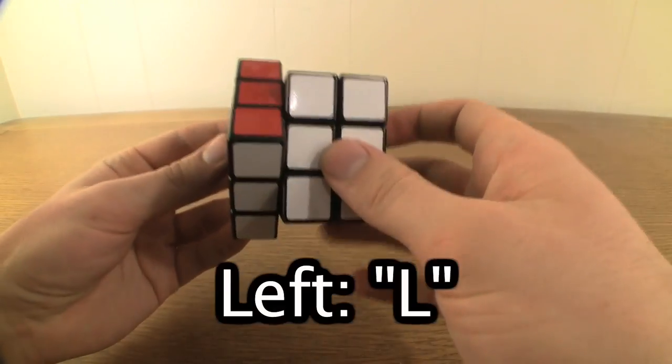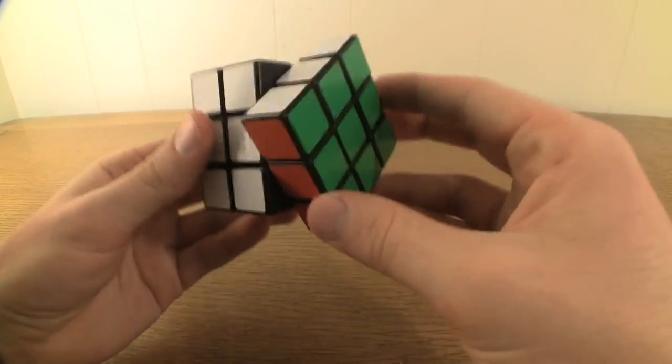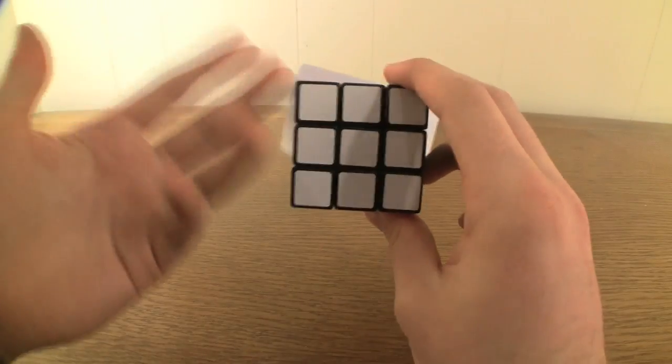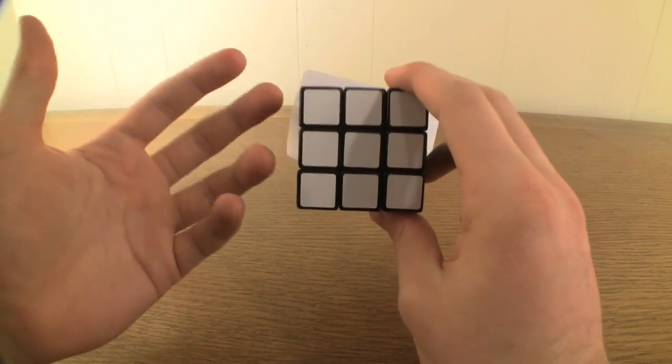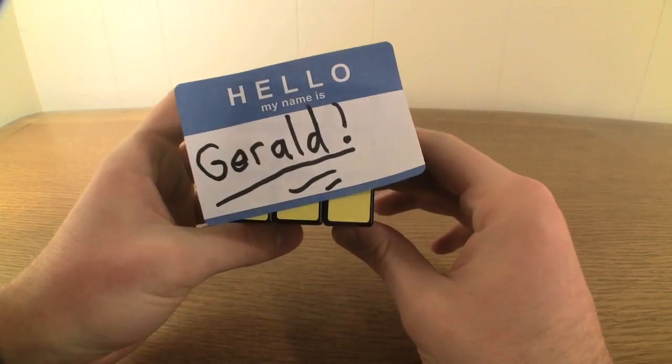The side that's on the left is known as left and is notated with a capital L. And the side that's on the right is known as right and is notated with a capital R. There is one more side, the side in back, however we don't need to use it so you can name it whatever you'd like. Mine's name is Gerald.